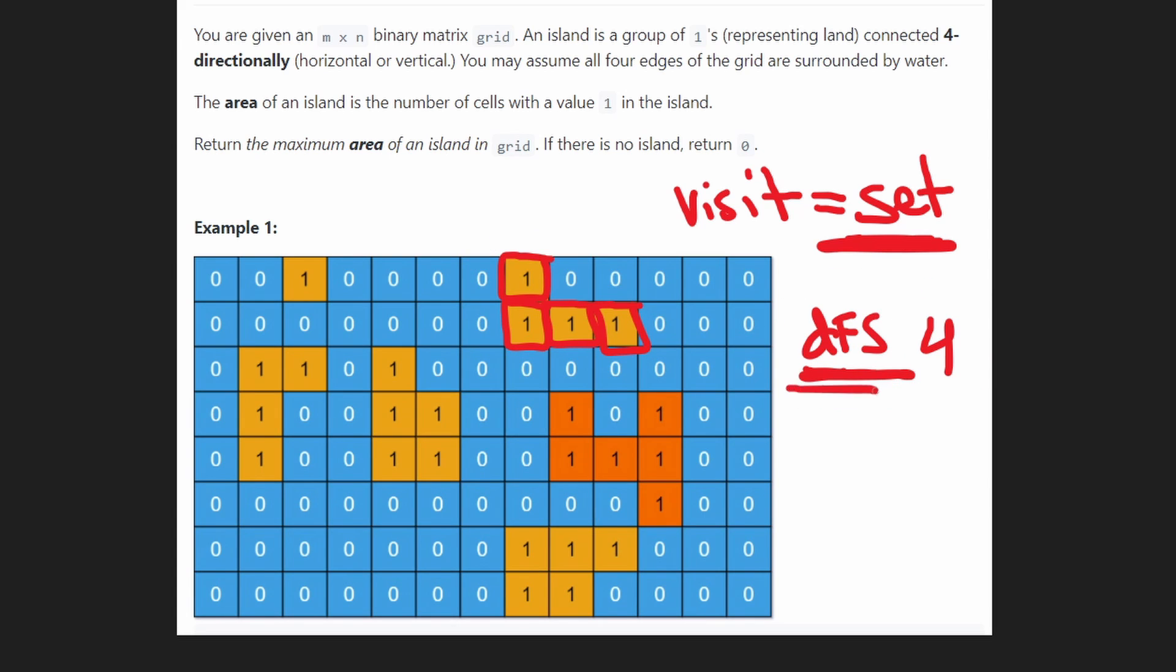Once you get good at writing DFS, DFS becomes trivial. All we have to do is figure out how to apply it to this problem and it's pretty simple in our case. We're going to run DFS on every single island and then keep track of which one of these has the maximum area. As you can see this one has the maximum area of 6 so we're going to end up returning 6 in this problem.